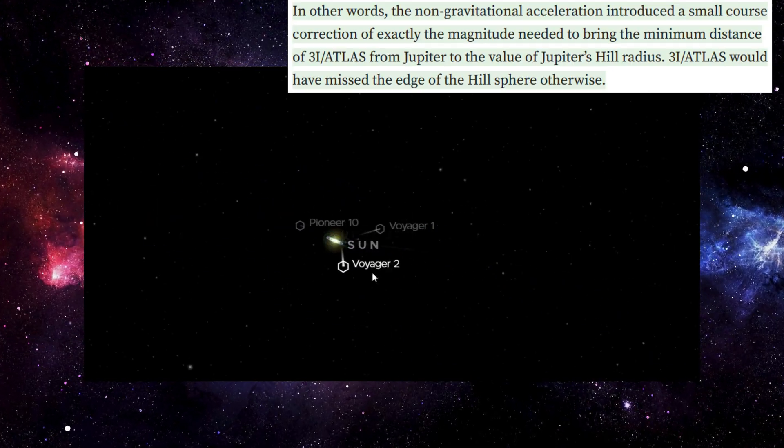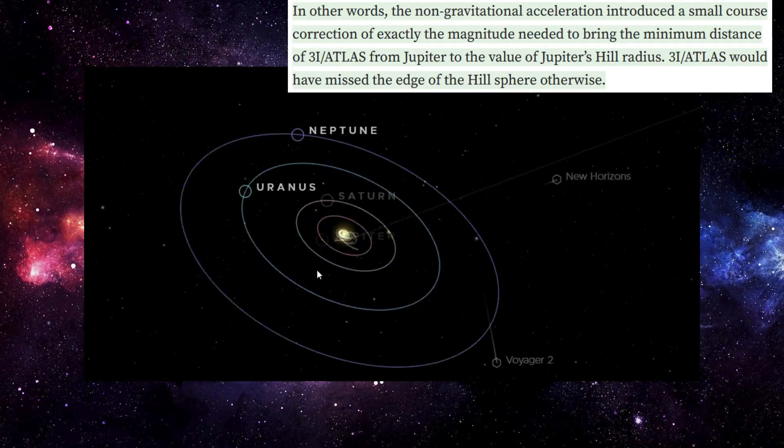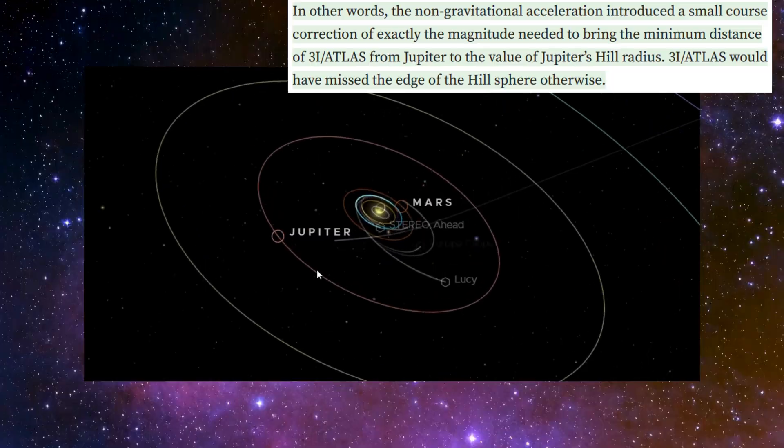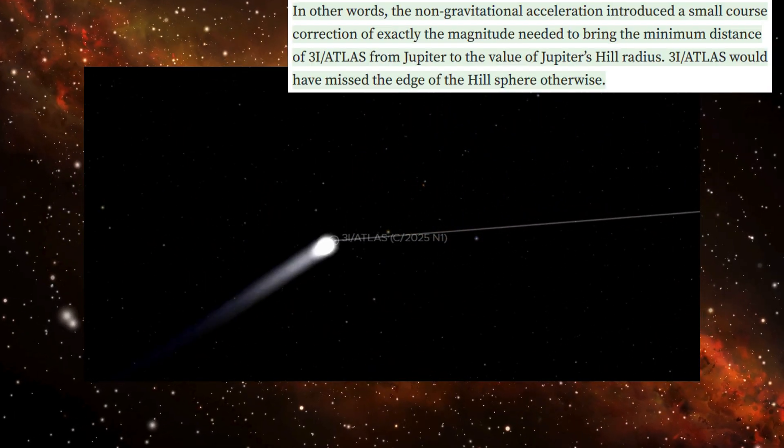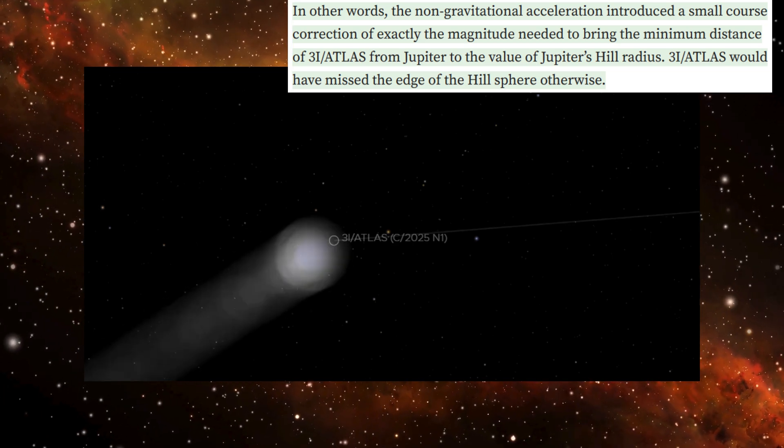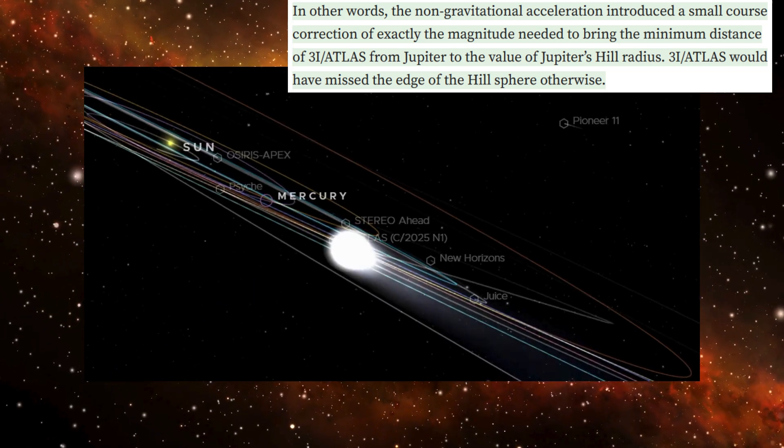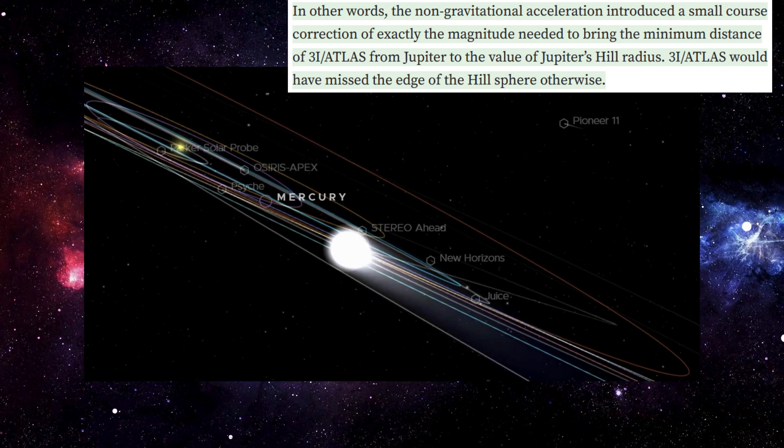And here's the jaw-dropping part. That shift is exactly, down to the mile, what was needed to move the object from its natural trajectory directly toward Jupiter's hill radius. Not near it. Not in the general vicinity. Directly to it.